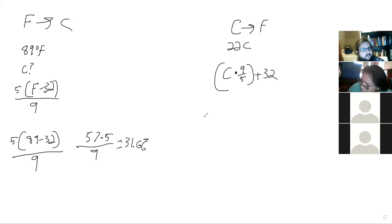We have 22 times nine-fifths plus 32, so this is 39.6 plus 32 is 71.6. So the low for tonight is 71.6 degrees.